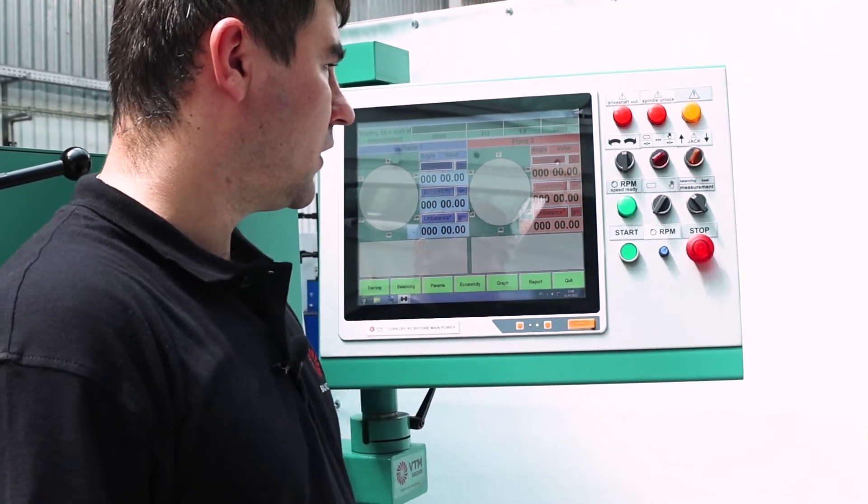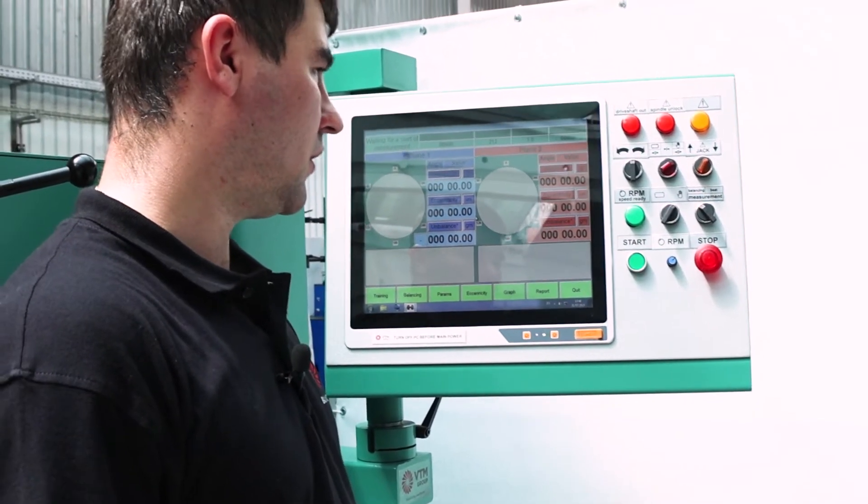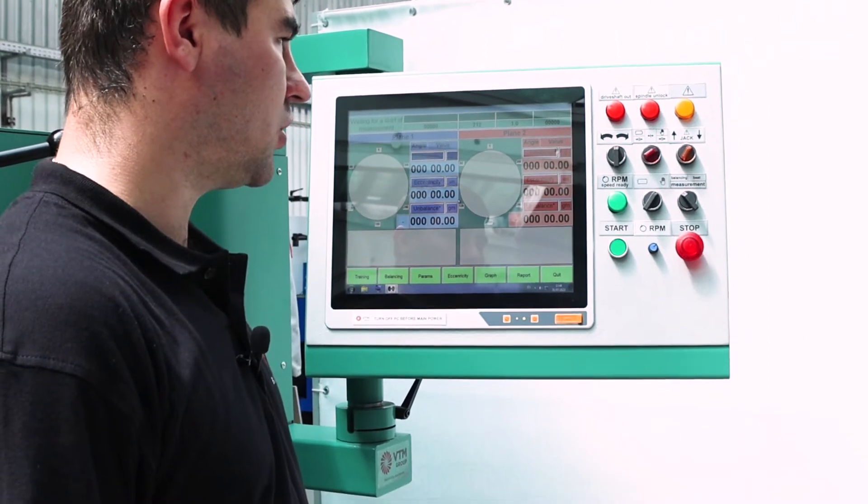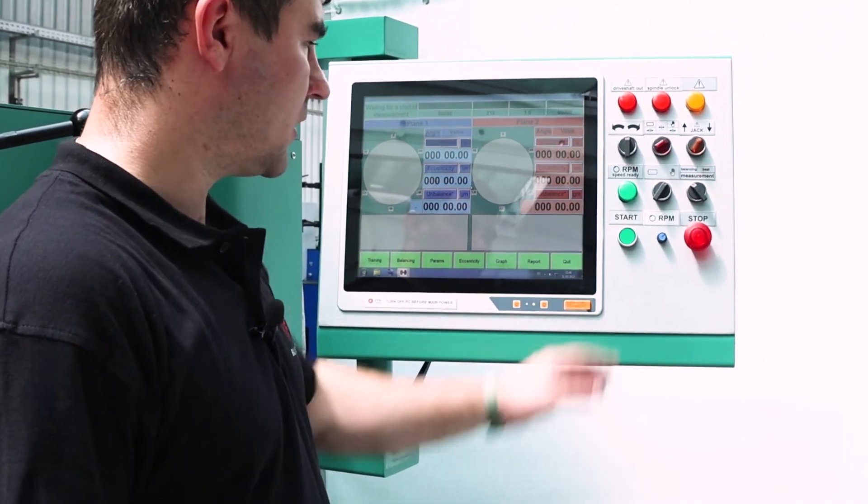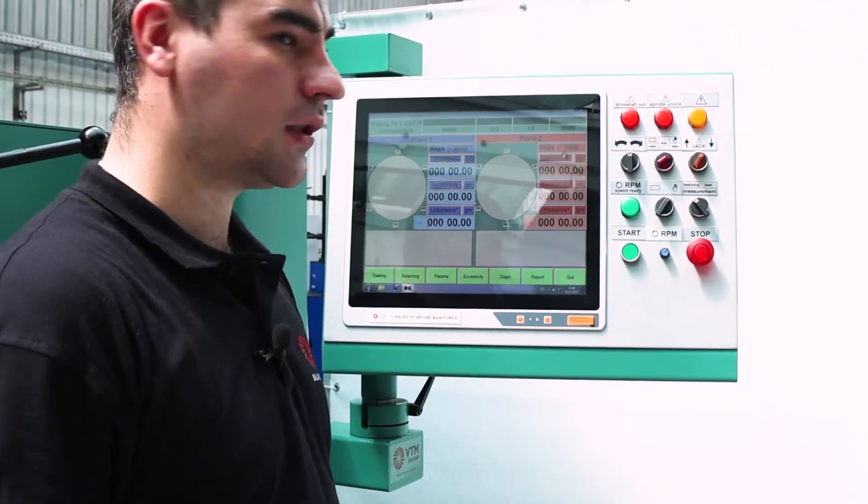The next switch is the main one on this machine. It switches the measurement mode of the machine from the balancing mode to the run-out mode, the start and stop rotation buttons, and the rotation speed controller of the wheelset.